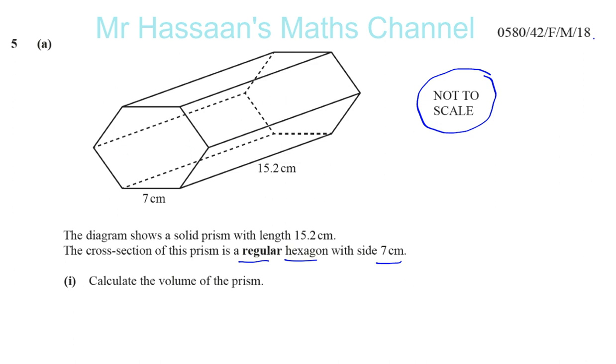You have to calculate first the volume of the prism. To find the volume of a prism, we need the area of the cross-section. You need the area of this hexagon, and you have to multiply it by how long it is, 15.2. That is how much space there is inside the prism. So we need to find the area of this face and then multiply it by 15.2.